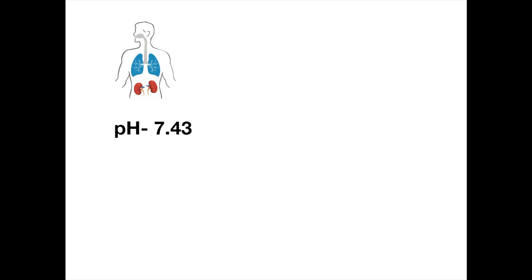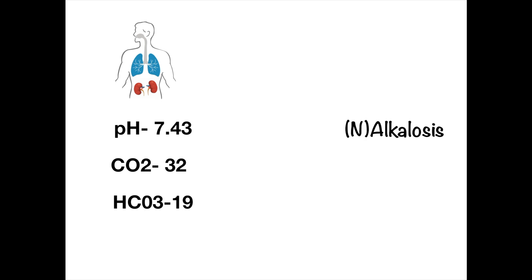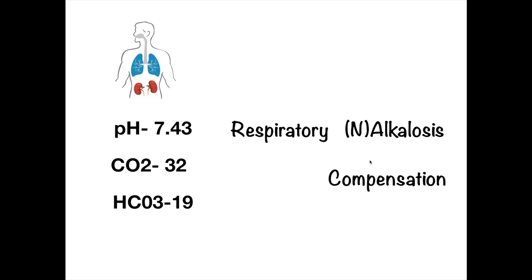Next: pH is 7.43, CO2 is 32, and bicarbonate is 19. 7.43 belongs to the alkalotic side, so this is alkalosis — but note the letter N because it is within normal range. CO2 is low, so what's causing the alkalosis is respiratory. Bicarbonate is 19 — the body detected the respiratory alkalosis and tried to compensate by reducing bicarbonate. Was the compensation enough to bring the pH back to normal? Yes — so this is a full compensation: respiratory alkalosis with full compensation.